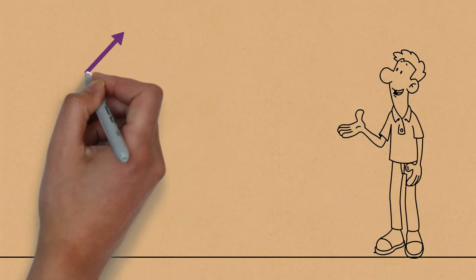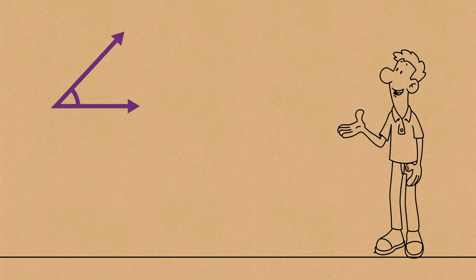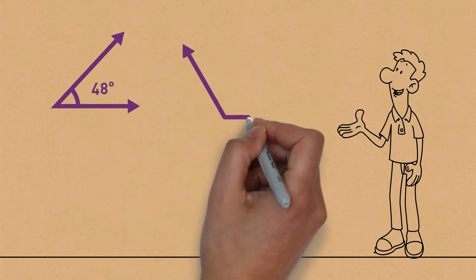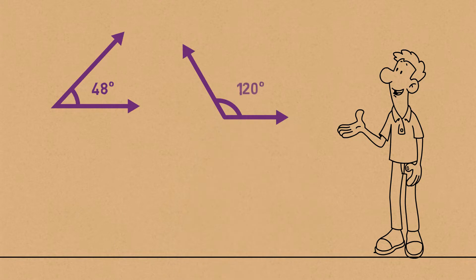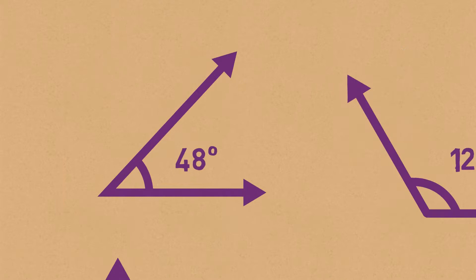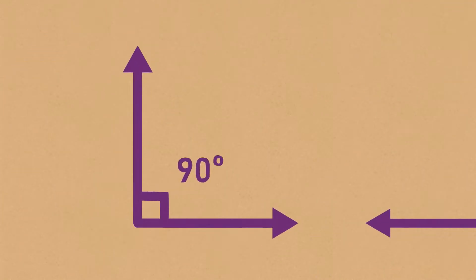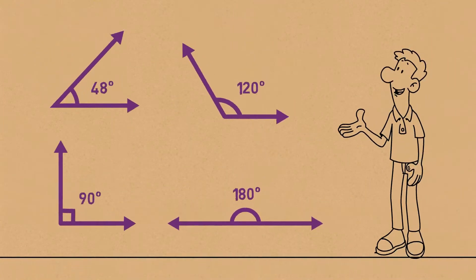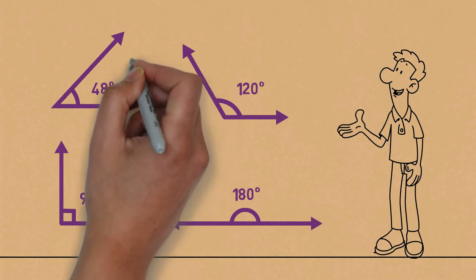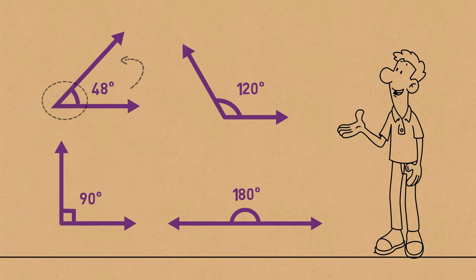An angle is an open path that forms when two lines meet together. So we've got one angle here, we've got another angle, we've got another angle, and then we've got another angle here. All of these over here are called angles, because these open parts create an angle when they meet together.